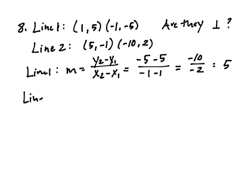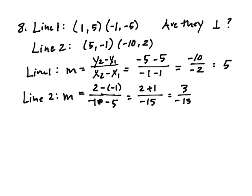The slope of my second line is m equals 2 minus negative 1 over negative 10 minus 5. And so I have 2 plus 1 over negative 15 equals 3 over negative 15. So I have negative 1 over 5.